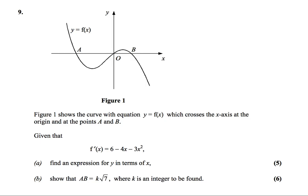Given that the derivative function f'(x) equals 6 minus 4x minus 3x squared. Part (a): find an expression for y in terms of x, worth 5 marks. Part (b): show that AB equals k square root 7, where k is an integer to be found, worth 6 marks.